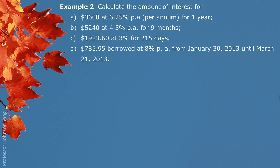Example 2: calculate the amount of interest for the following situations. Part A: $3,600 at 6.25% annual interest rate for 1 year. We apply the formula I equals PRT. We put $3,600 as principal, 6.25% expressed as a decimal, multiplied by 1 year — no conversion needed. The answer is $225 as the interest.